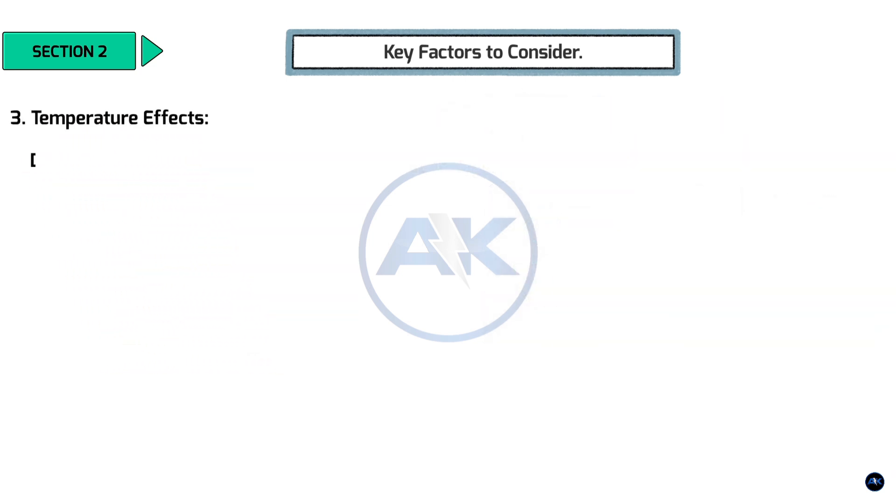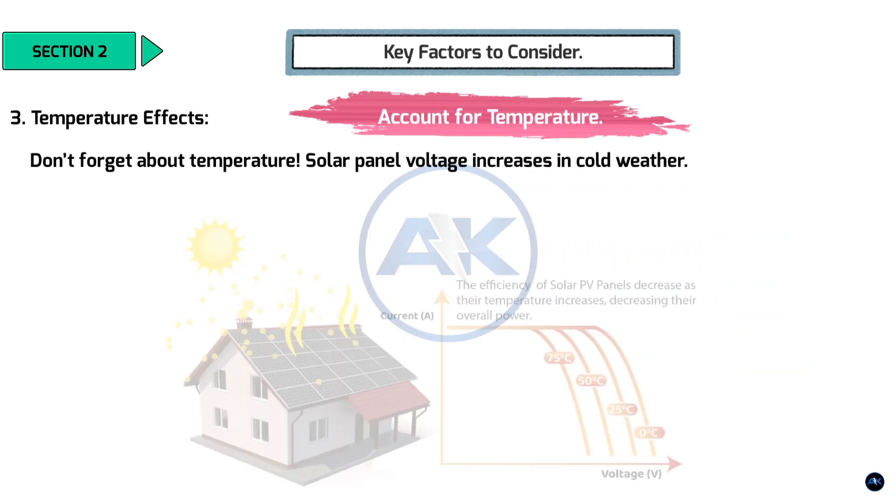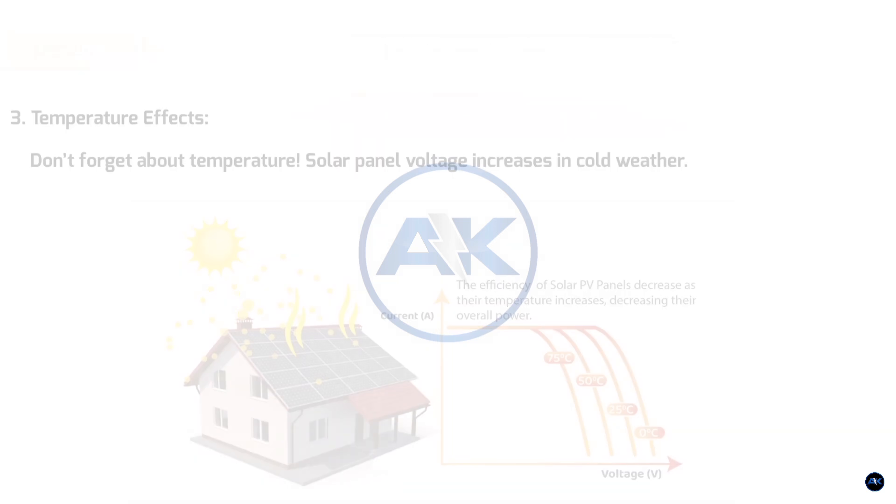3. Temperature Effects. Don't forget about temperature. Solar panel voltage increases in cold weather. So, you need to account for the lowest expected temperature in your area. Most datasheets include a temperature coefficient for voltage.